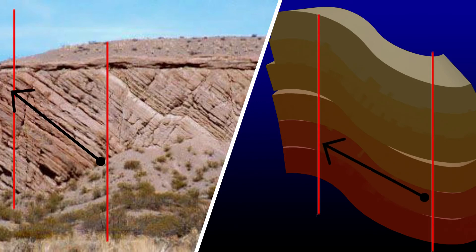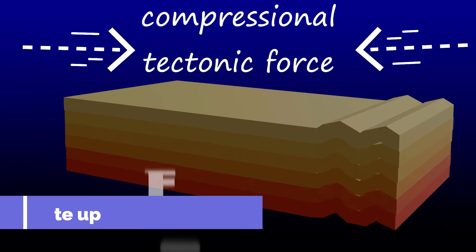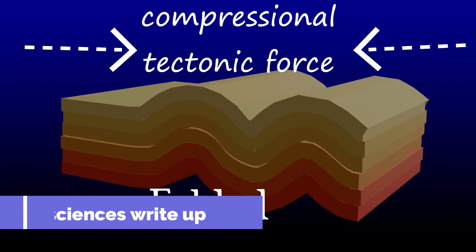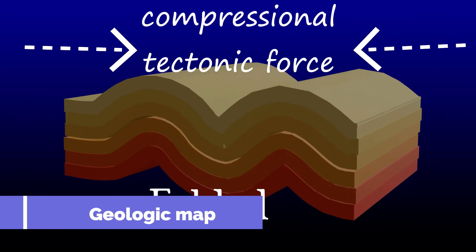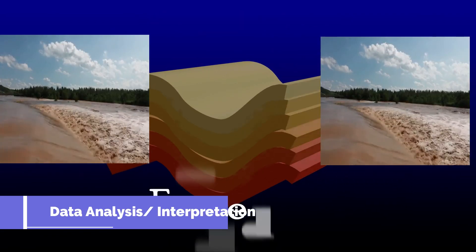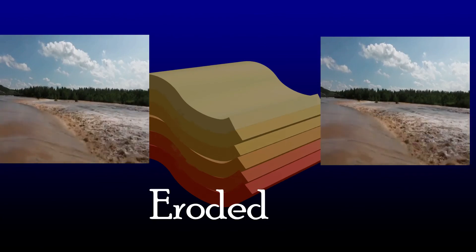I think these two rocks look alike. The most likely way it might have formed is for layers of sediment to be deposited, then they become folded, and then part of it becomes eroded by an erosion agent — maybe water.